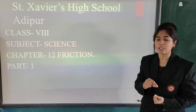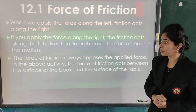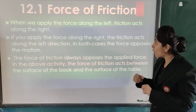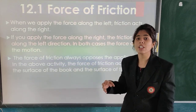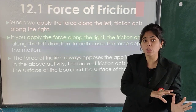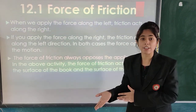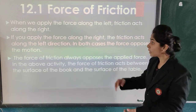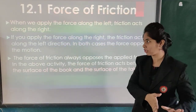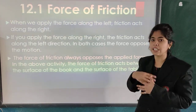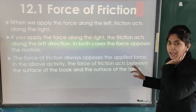Now let us see the force of friction. When we apply force along the left, friction acts along the right. So when we apply force from the left, the object will move towards the right. Friction acts on the opposite side from where we are applying force. If you apply force along the right, friction acts along the left direction. In both cases, the force opposes the motion. The force of friction always opposes the applied force.